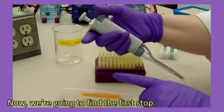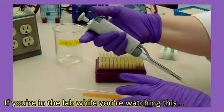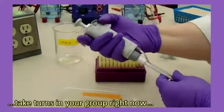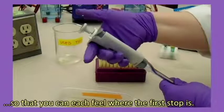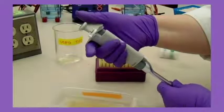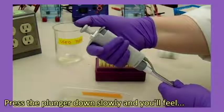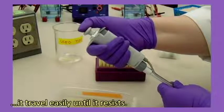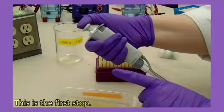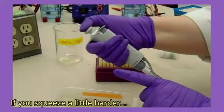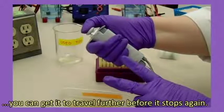Now we're going to find the first stop. If you're in the lab while you're watching this, take turns in your group right now so that you can each feel where the first stop is. Press the plunger down slowly and you'll feel it travel easily until it resists. This is the first stop. If you squeeze a little harder, you can get it to travel further before it stops again.